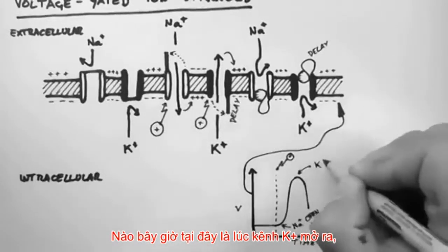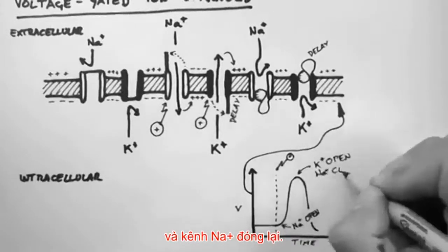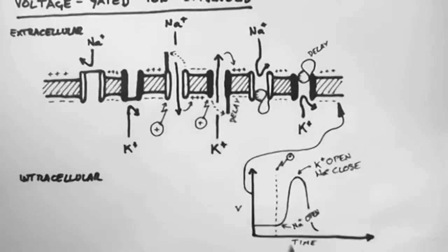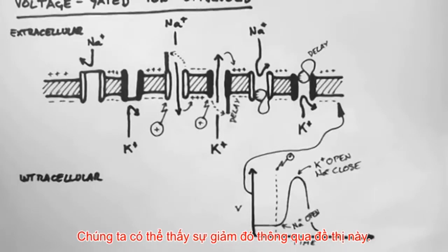Now here, the potassium channels open, and the sodium channels close. The positively charged potassium rushes out of the cell, and the cell becomes more negatively charged. And we can see that drop on this graph also.